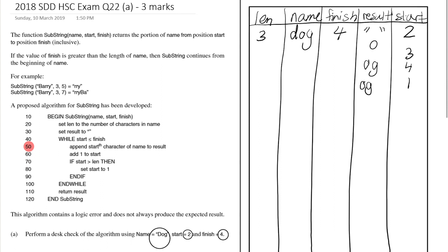To correct the capitalization, name should be 'DOG' with an uppercase D. Continuing, we add one to start, making start 2. Start is not greater than len, so we skip the if statement and loop again. Start 2 is still less than finish 4, so we append the second character 'O' to result, giving 'ogDO'.